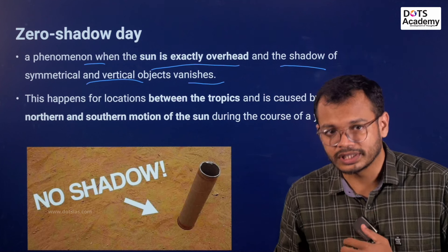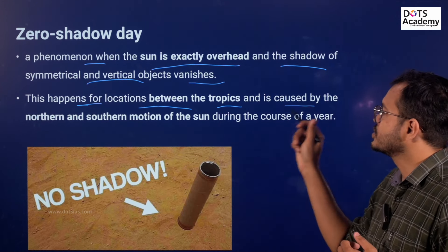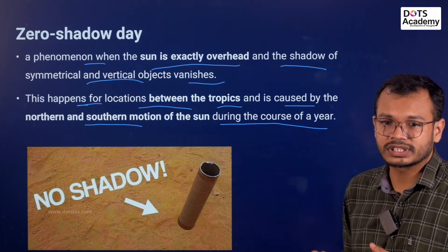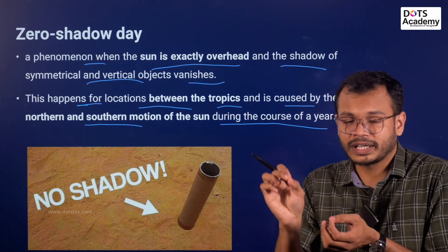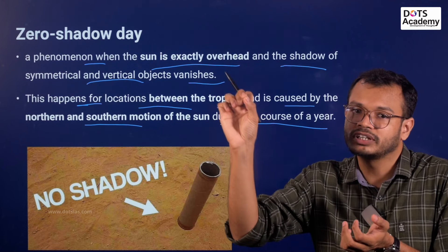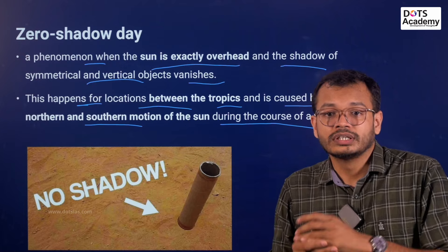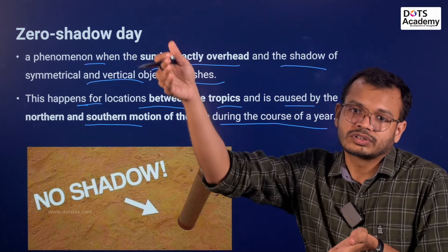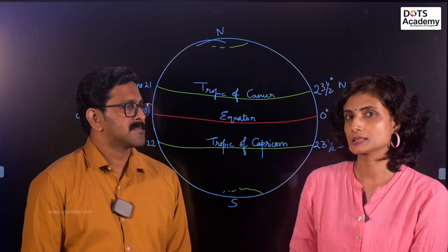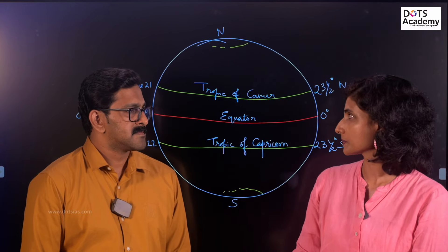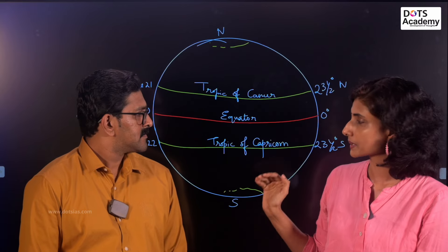This mainly happens for locations between the tropics, caused by the northern and southern motion of the sun during the course of the year. The sun is directly overhead in the geography. This phenomenon, the Zero Shadow Day, cannot occur beyond the Tropic of Cancer or the Tropic of Capricorn — that is, between the tropics: the Tropic of Cancer and the Tropic of Capricorn.